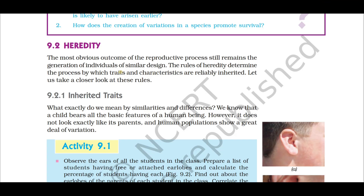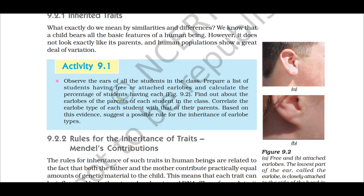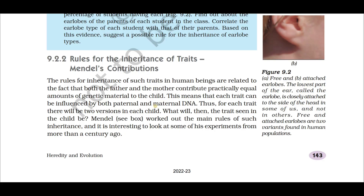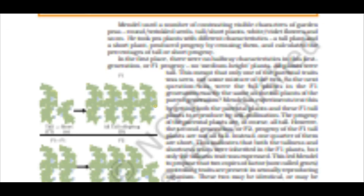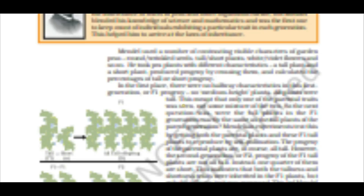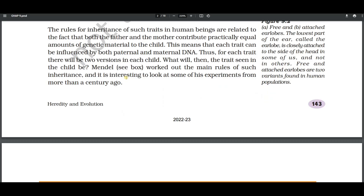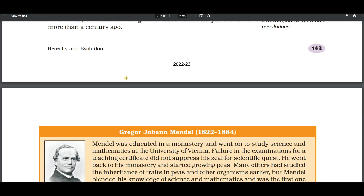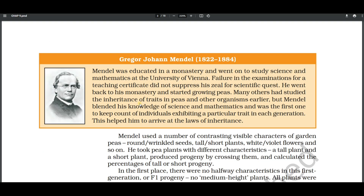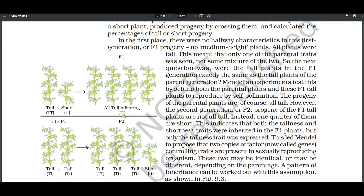What is heredity? The transfer of parental characters to the offspring is called heredity. You have Mendel's experiment here to show that traits can be dominant or recessive. From the examination point of view, the important three or four mark question you can expect is Mendel's monohybrid and dihybrid experiment, which both explain the concept that a trait can be dominant or recessive. With the help of the checker board you should explain monohybrid or dihybrid cross.